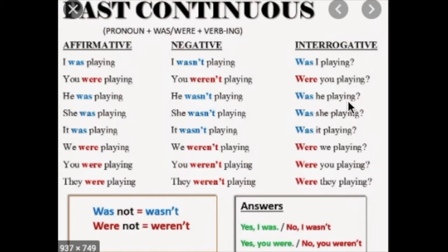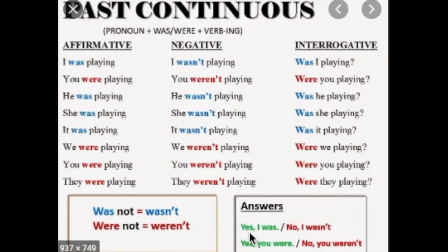Were you playing? Was he playing? Was she playing? Was it playing? Were we playing? Were you playing? Were they playing? Y las negativas: he wasn't playing, she wasn't playing, it wasn't playing. Y las afirmativas: he was playing, she was playing, it was playing. Ya sabemos que nuestro verbo va en -ing form. Nuestras contracciones: was not se usa como wasn't, were not como weren't. Y en las respuestas cortas: yes I was, no I wasn't, yes you were, no you weren't. Aquí está más específico y práctico, es la misma oración con todos los sujetos y en las tres formas. Muchas gracias.